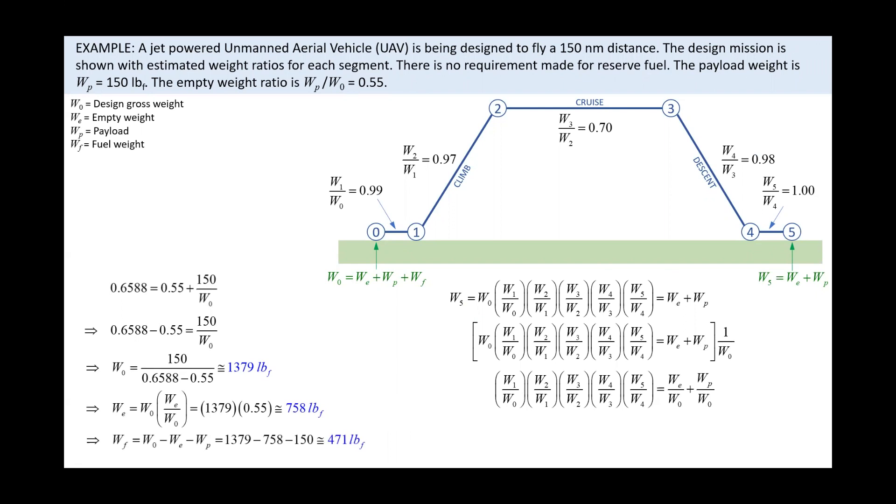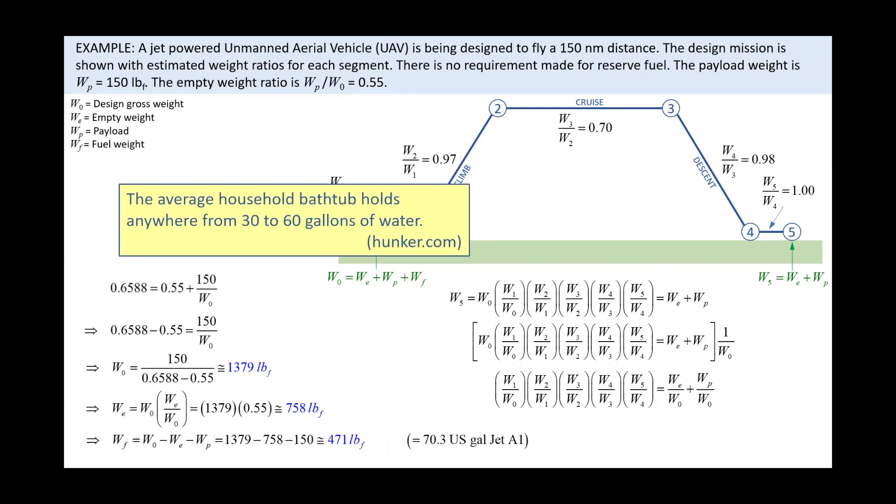Then, we can also figure out the required fuel weight. It is simply the gross weight minus the empty weight minus the payload. This gives a required fuel weight of about 471 pounds for our design mission. This corresponds to about 70 US gallons of Jet A1. Volumetrically, that corresponds to space in excess of one large bathtub of fuel. Using that analogy helps us envision how much internal volume to carry that fuel our aircraft must provide.